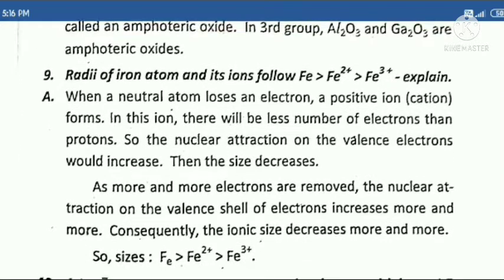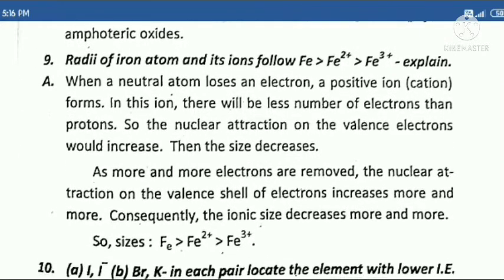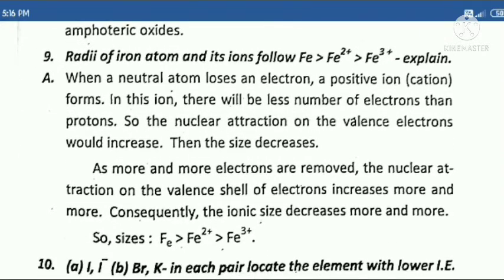Ninth question: The radii of iron atom and its ions follow the order Fe > Fe²⁺ > Fe³⁺. Explain.